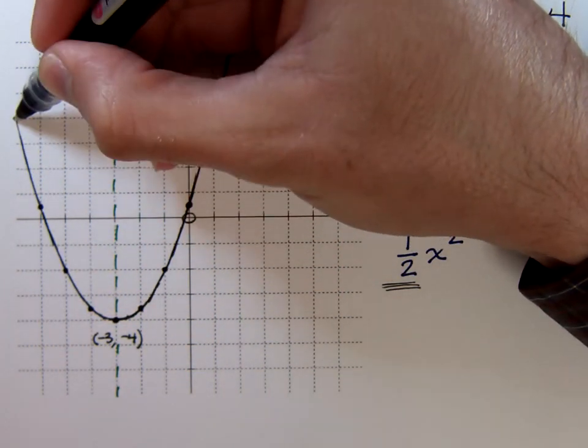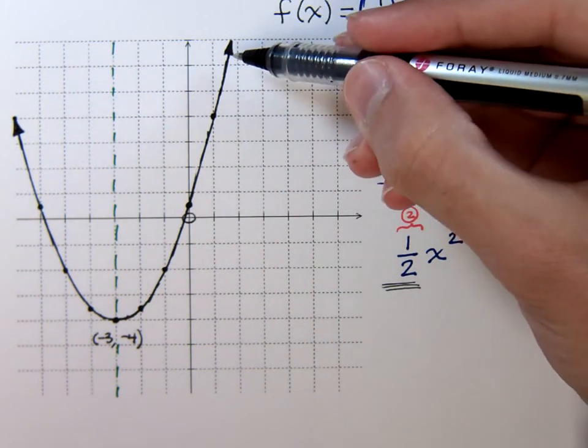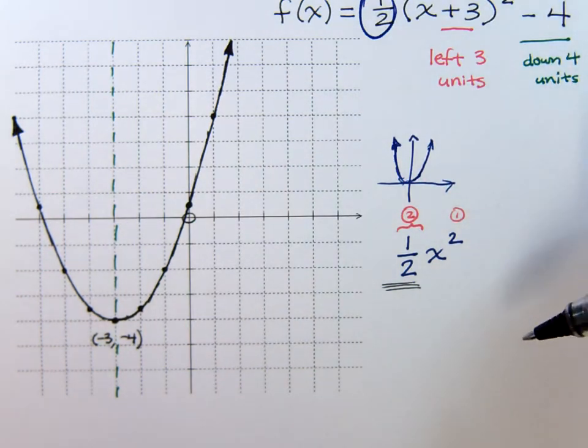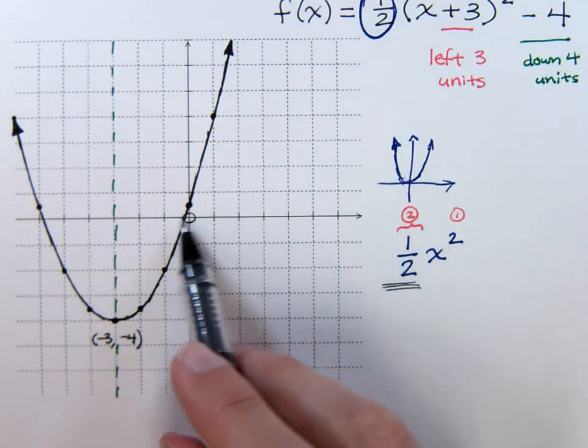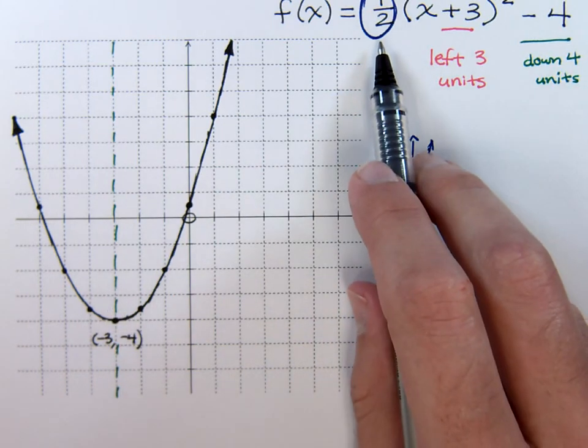Make sure that you do take your graphs all the way to the edge. Put your arrows to indicate that you do go on forever in both directions, and you've got your parabola. Remember, we shifted to the left three, down four, and we had this vertical compression of one half.